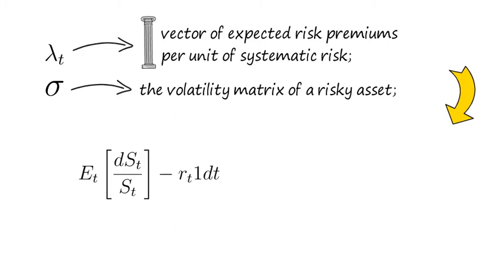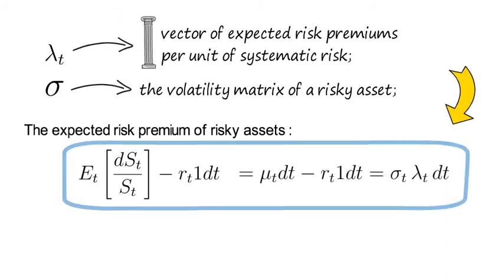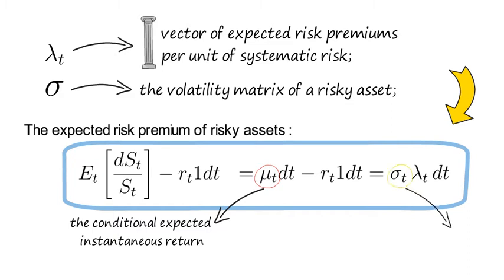denoted as the conditional expectation of dst over st minus rt dt, equals the following expression, where mu t is the conditional expected instantaneous return of risky assets, and sigma t is the instantaneous volatility matrix of the risky assets.